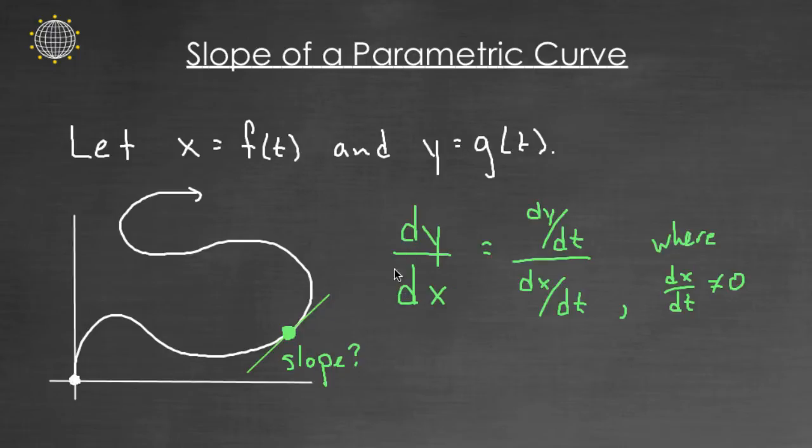The dy dx, the change in y over the change in x, the slope at that point, will be given by dy dt divided by dx dt. And that's totally doable because y is a function of t and x is a function of t. So how I've defined x and y, we basically have g prime over f prime. The only caveat is you have to make sure that your dx dt is not zero at that point, because if there's no change in x, you'd get a vertical tangent line and your slope would be undefined.